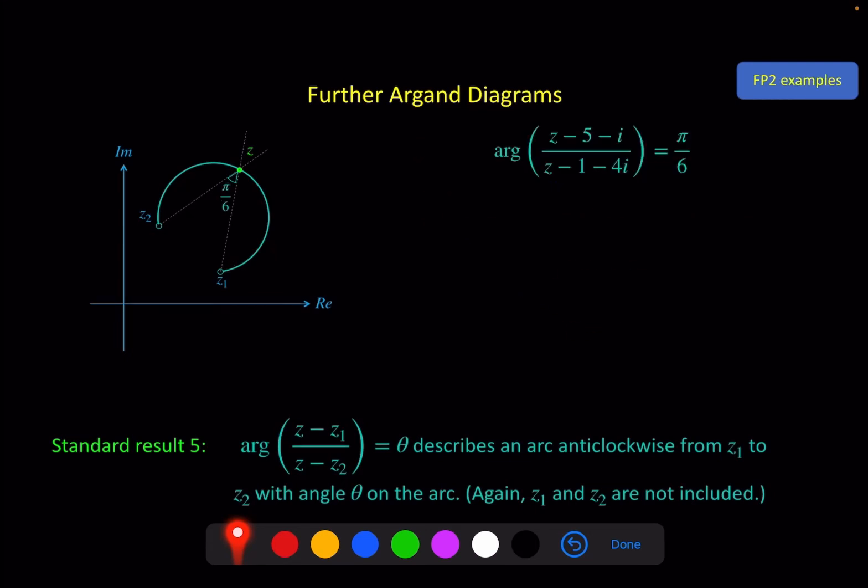So another quick example is something like this. Or again, be careful with your negatives. z1 is 5 plus i here. And z2 is 1 plus 4i here. And then pi by 6 is not this part of the circle. It's this part of the circle. And it's going anti-clockwise from z1 to z2. So it's this direction, not this direction.